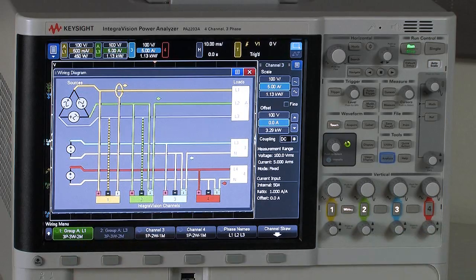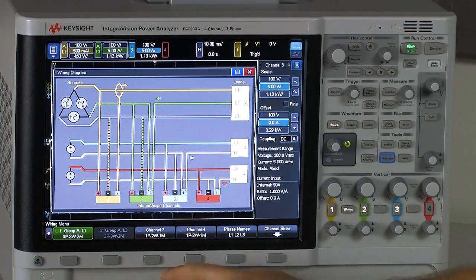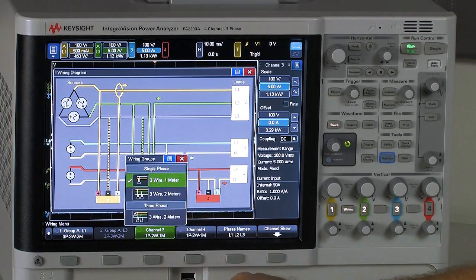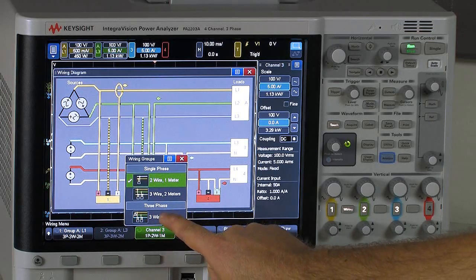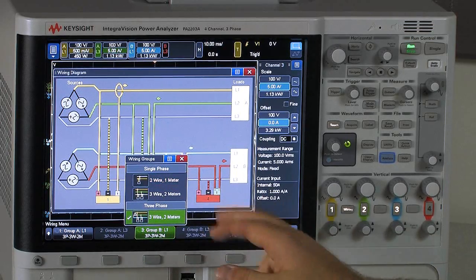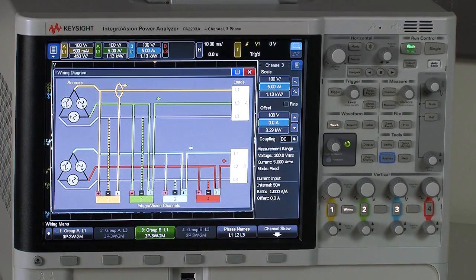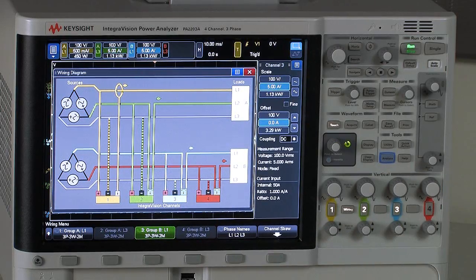So for example, I have channels one and two set up for that three-phase two-meter measurement. I can go over here and configure channel three and four again for a three-phase, three-wire, two-meter measurement. So in that way, for certain systems, I could actually characterize a three-phase in, three-phase out system.